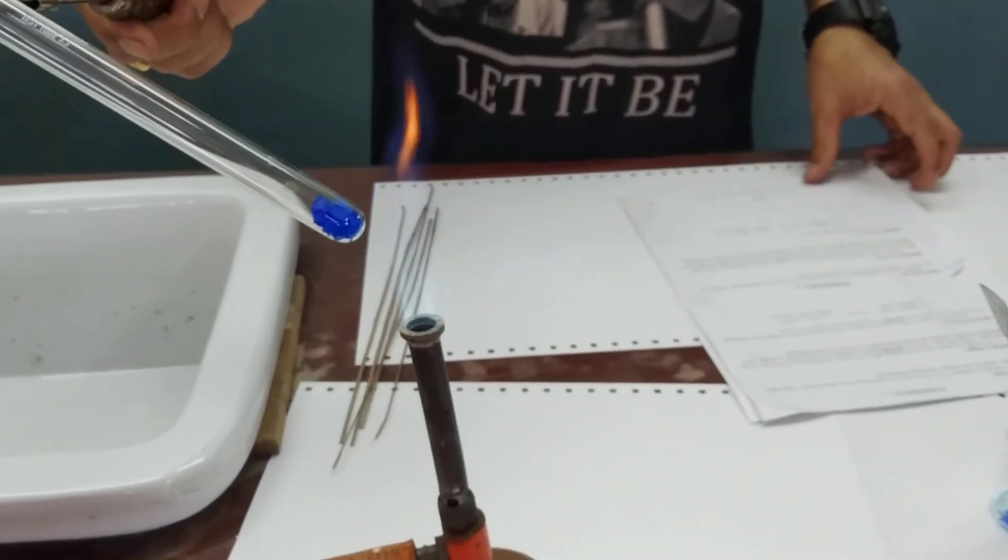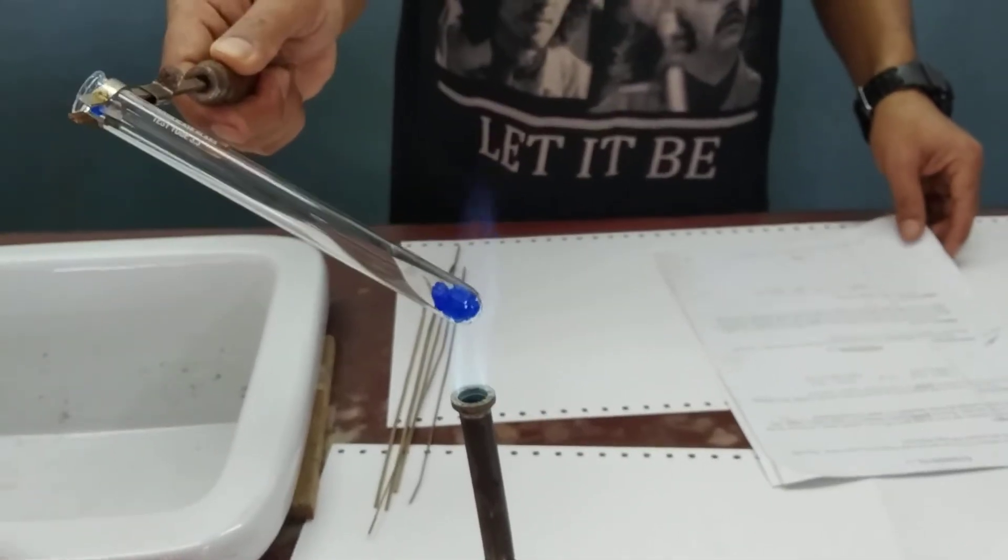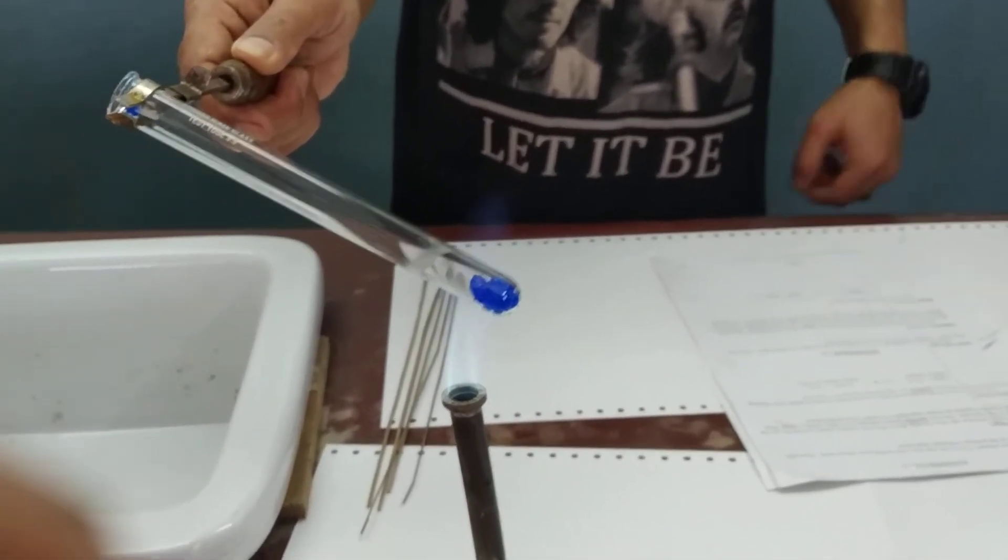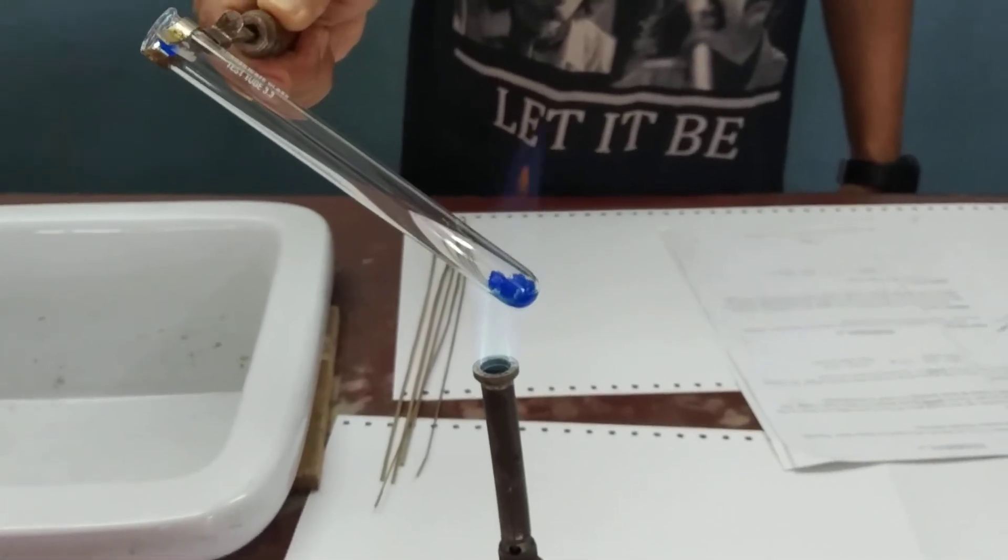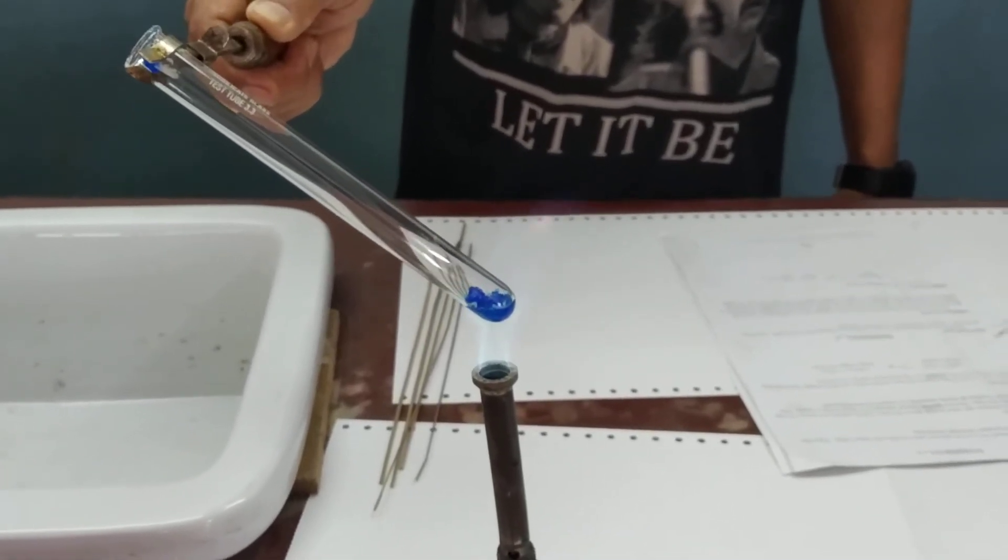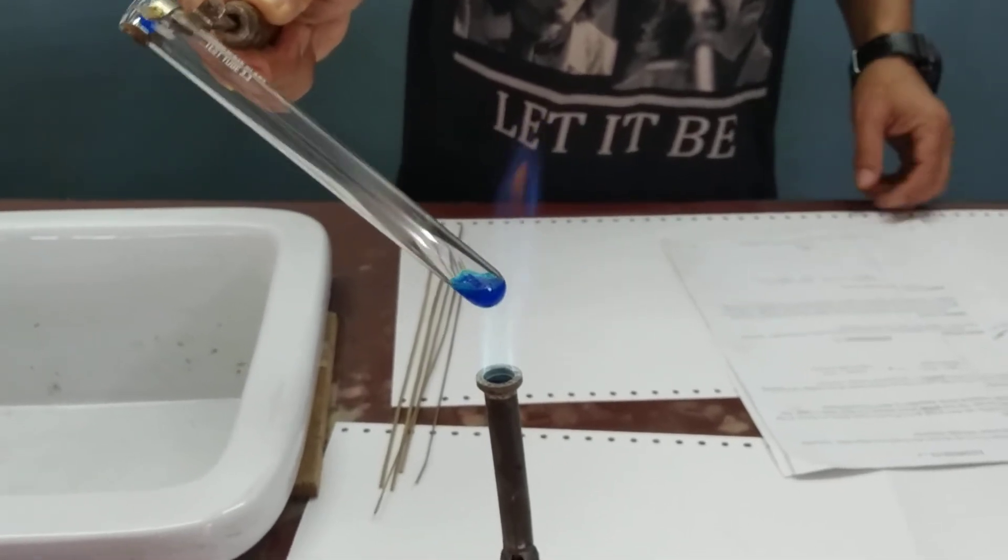We heat sample B in a dry test tube, similar to experiment number one. Record your observations, describe the residue, identify the product, and make deductions.